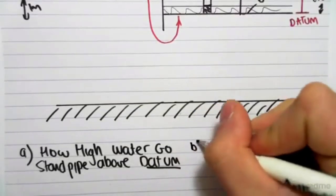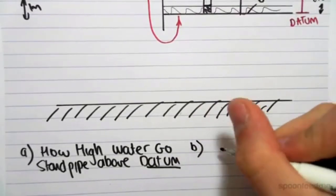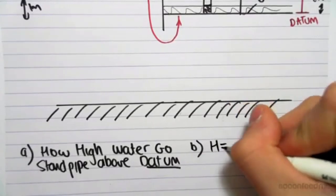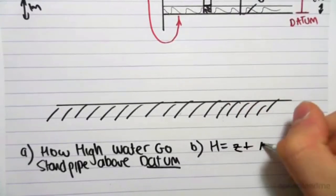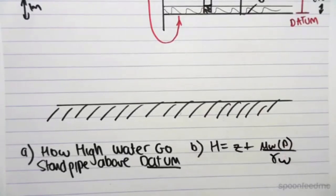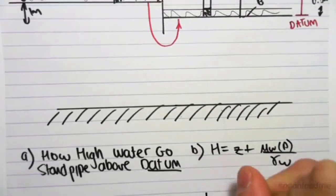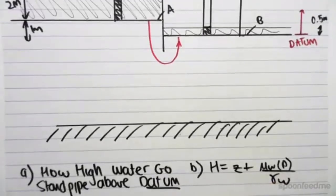Now we can define the head another way. We can think of it as just the definition of head, where head equals z plus the pore water pressure on gamma water.